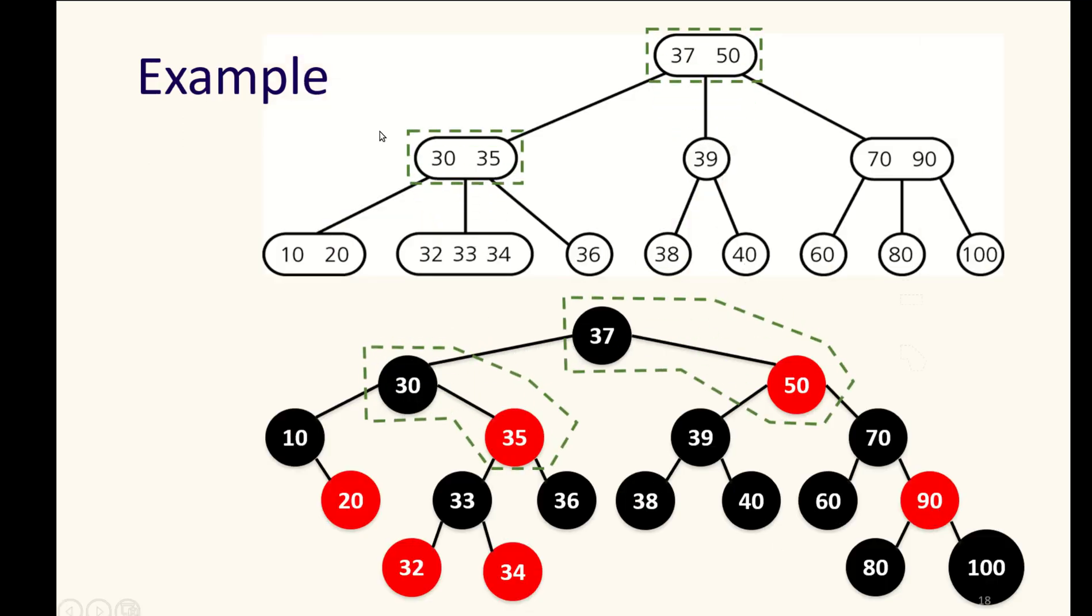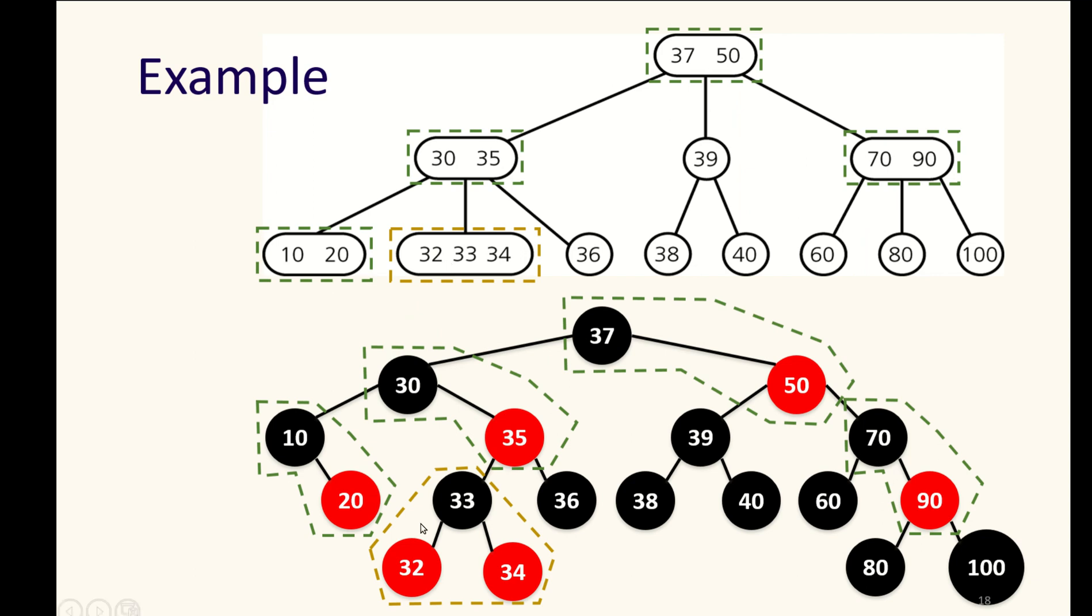Here's another way of drawing a 2-3-4 tree, and this maps again some of the pieces inside of our red-black tree. So you'll notice that just having both children does not necessarily make something map perfectly to a four node in our 2-3-4 tree.